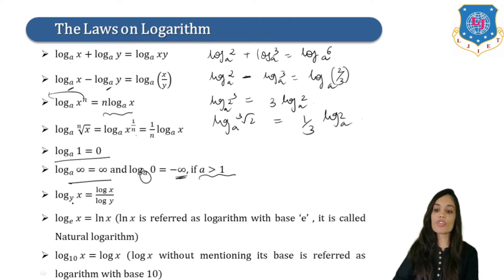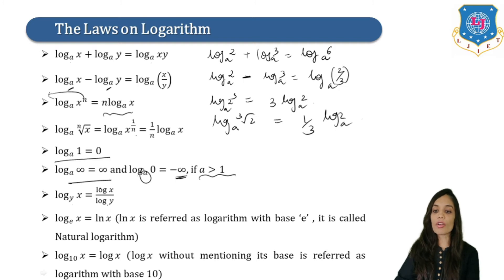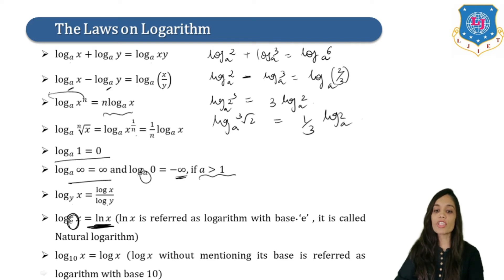This is very important in solving examples. If we have log x to the base y, we can write it as log x upon log y — that is, we can separate both and write it in this manner. Now if we have base e, then we represent it as ln x. It is referred to as the logarithm with base e and is also known as the natural log.